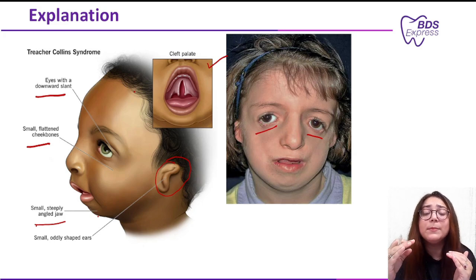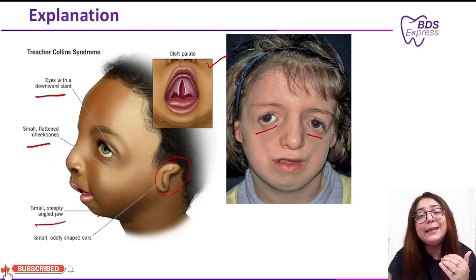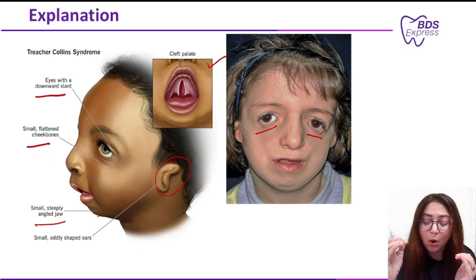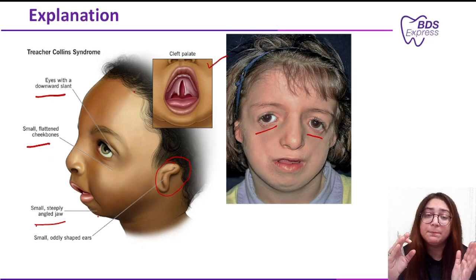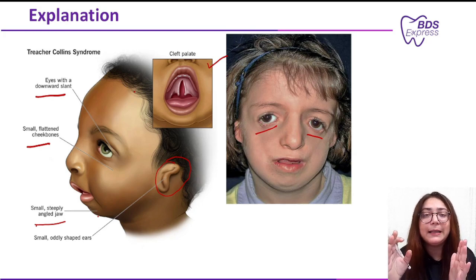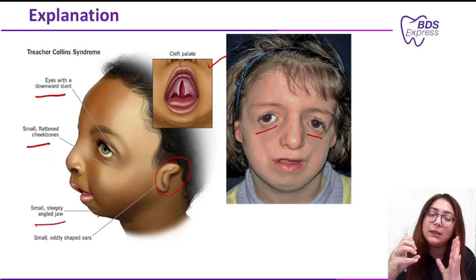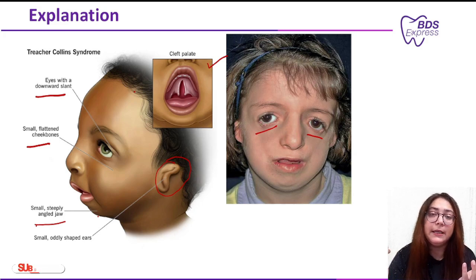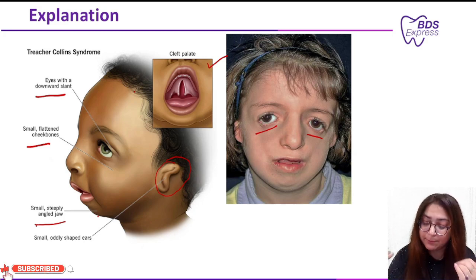Pierre Robin syndrome is characterized by a small jaw or micrognathia, which can lead to cleft palate and breathing difficulties. However, altered neural crest cells are not implicated in Pierre Robin syndrome or Perry-Romberg syndrome. Perry-Romberg syndrome is accompanied by hemifacial atrophy — half of the face is smaller compared to the other half. Cleft palate is simply a developmental defect occurring during embryogenesis.